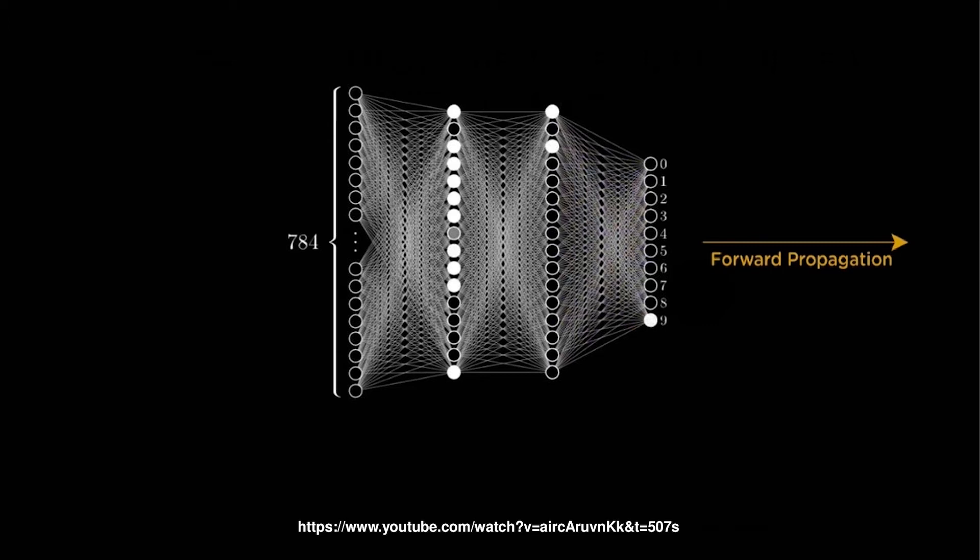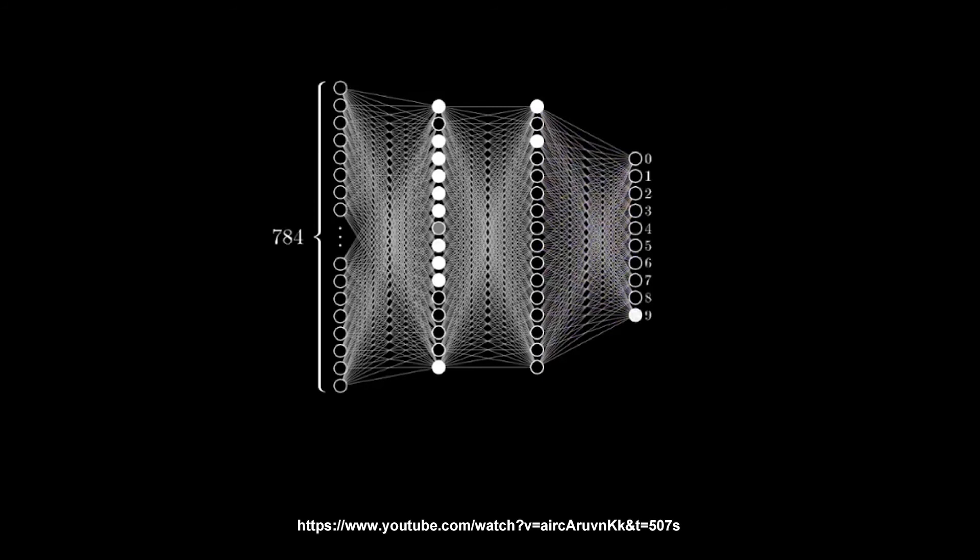In this manner, the data is being propagated through the network. This is what is called forward propagation. In the output layer, the neuron with the highest value fires and determines the output. The values are basically a probability. For example, let's say that the artificial neural network predicts the number as 8, but the actual number is 9. By looking at it, we know that it is wrong. But how will the computer figure this out? Or how will the artificial neural network figure this out?